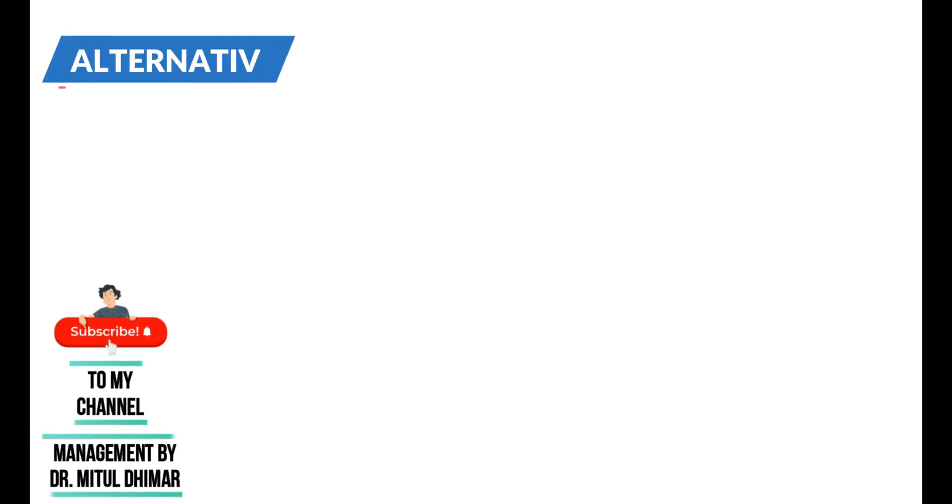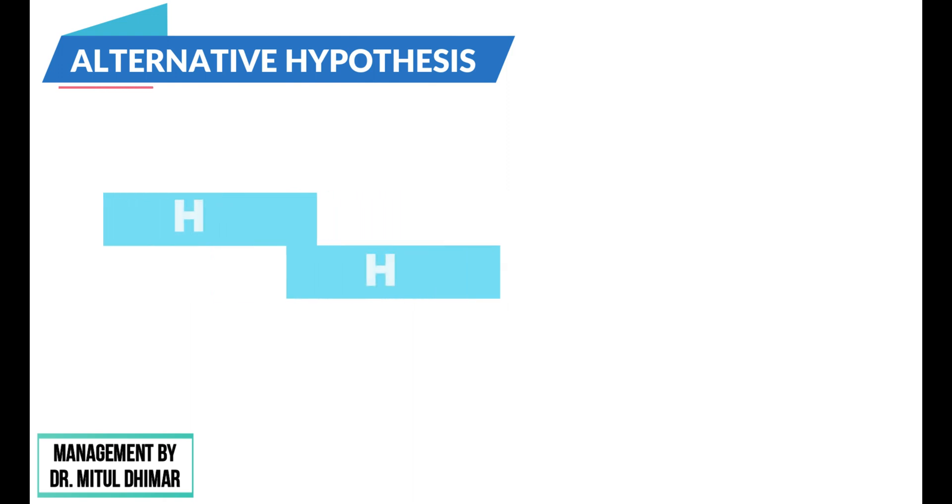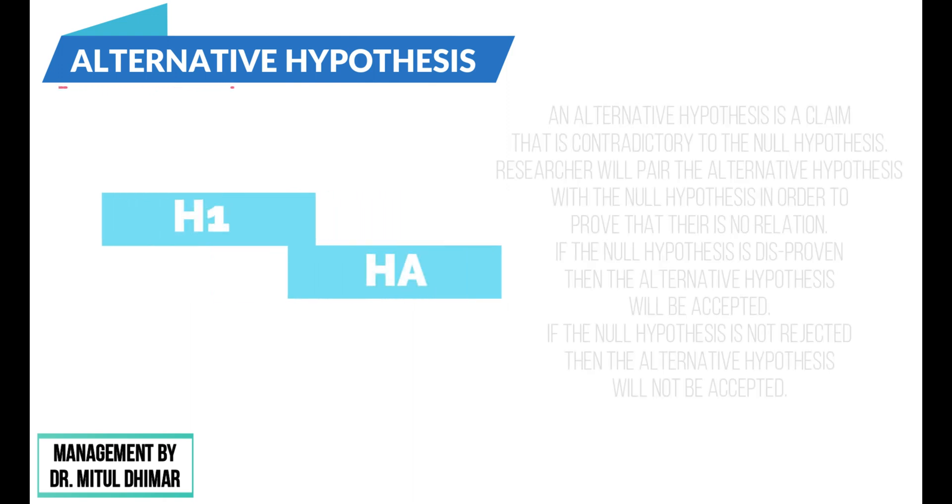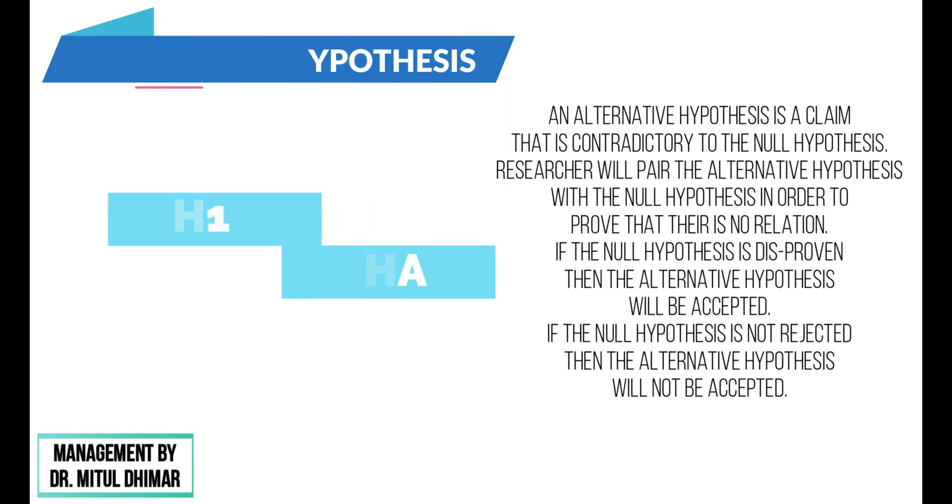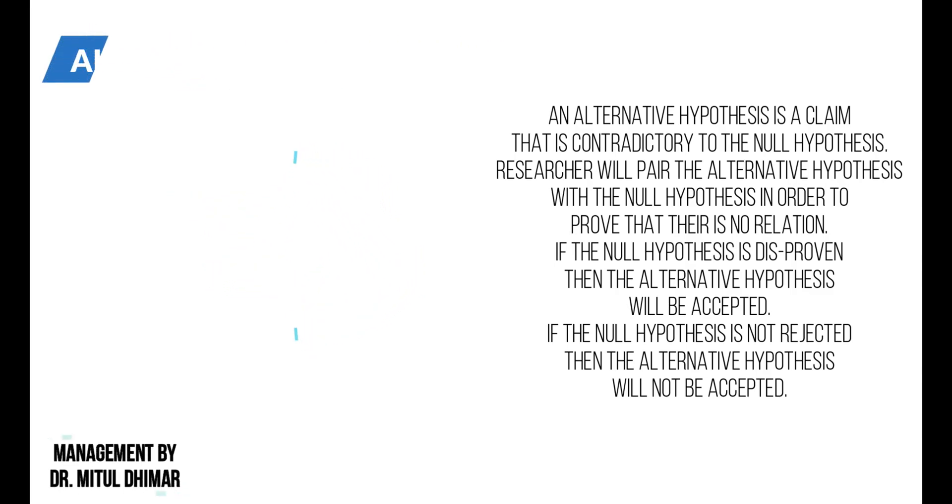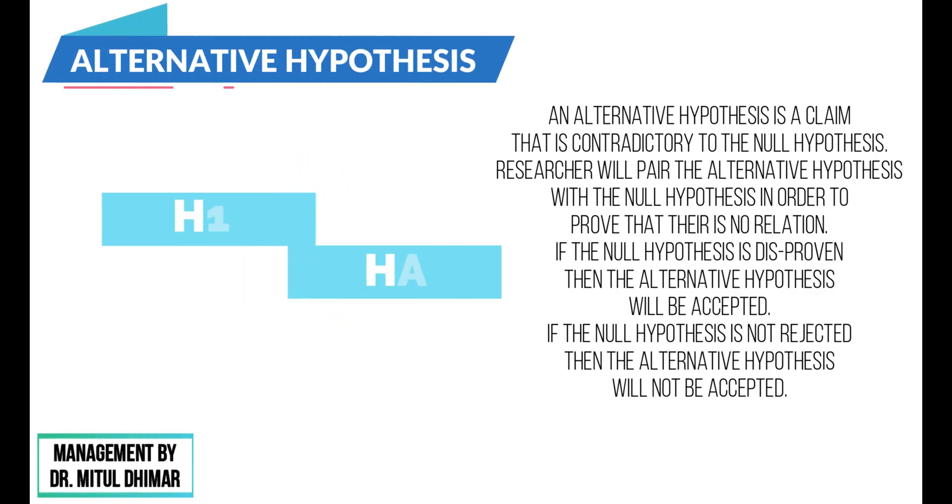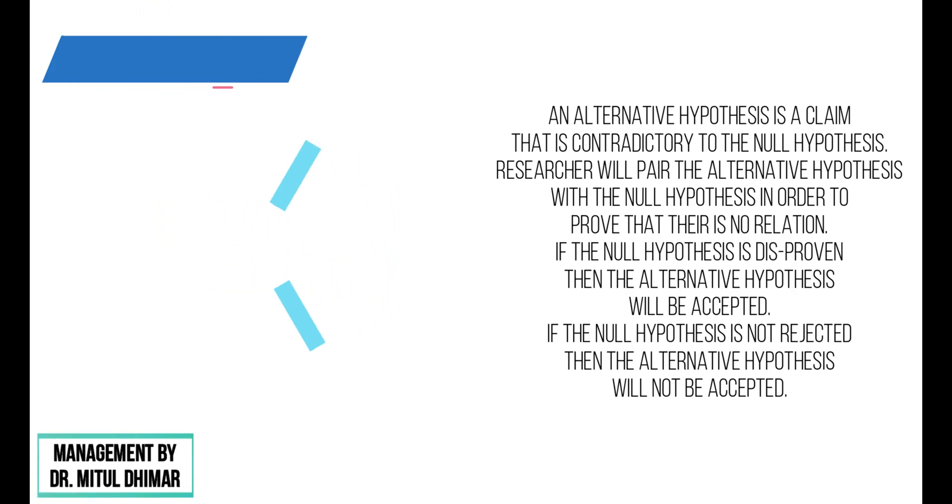Number five, alternative hypothesis. An alternative hypothesis denoted by H1 or HA is a claim that is contradictory to the null hypothesis. Researchers will pair the alternative hypothesis with the null hypothesis in order to prove that there is no relation.